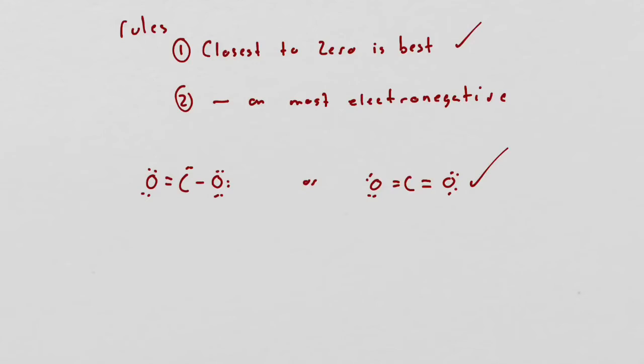The second rule is, all things being equal, if you have two different structures each of which has formal charges that are both equivalent, pick the one in which the negative ends up on the most electronegative of the elements. Let's start with a really simple example that we only have to use the first rule on. We're considering two alternative structures for carbon dioxide or CO2. These both meet the octet rule, so these are legitimate Lewis structures. We'll call this A, B, and we'll call it the C. We'll make the oxygens A and B and make the carbon equal to C.